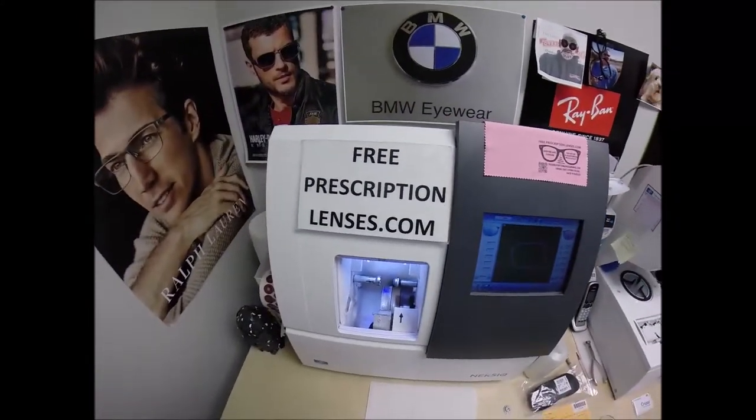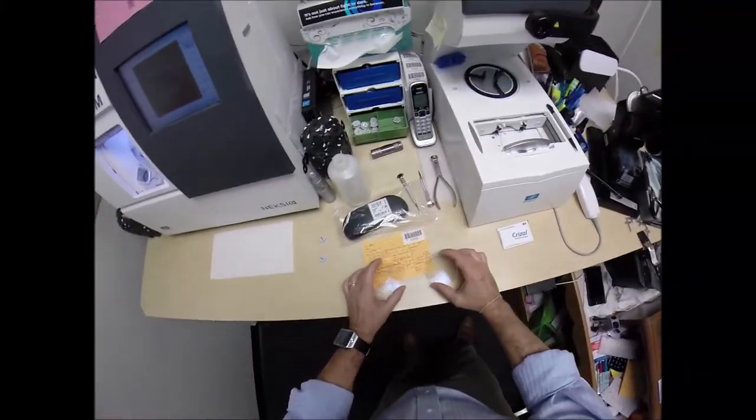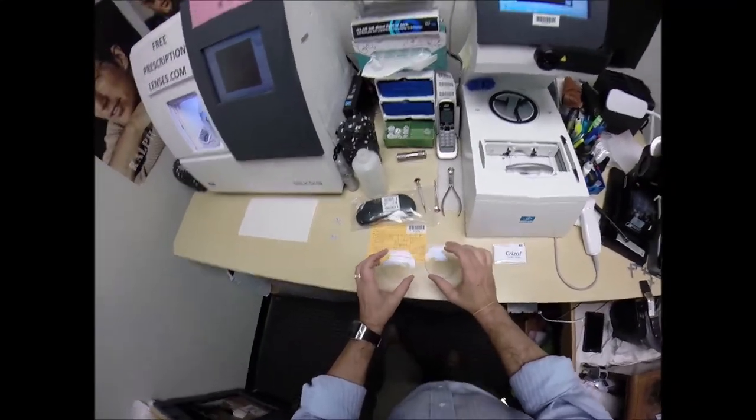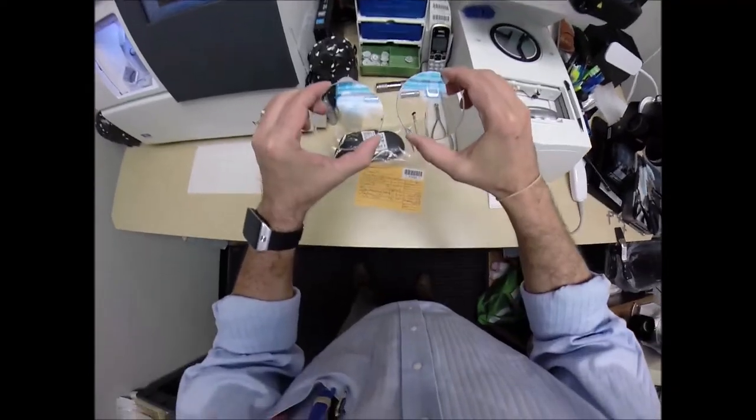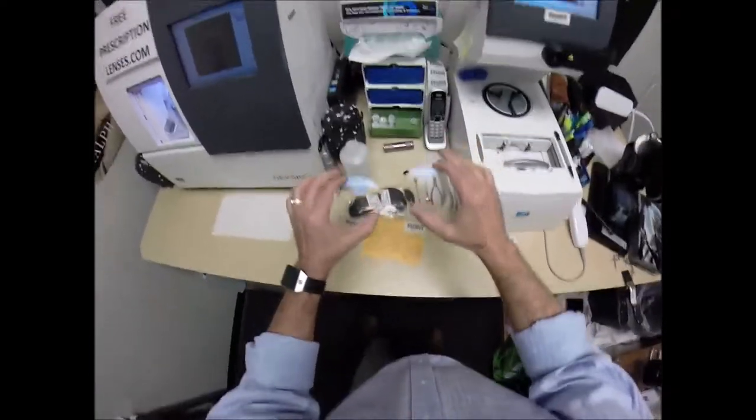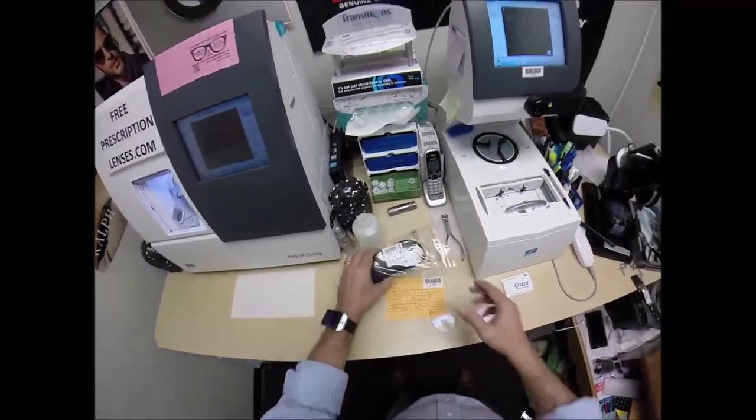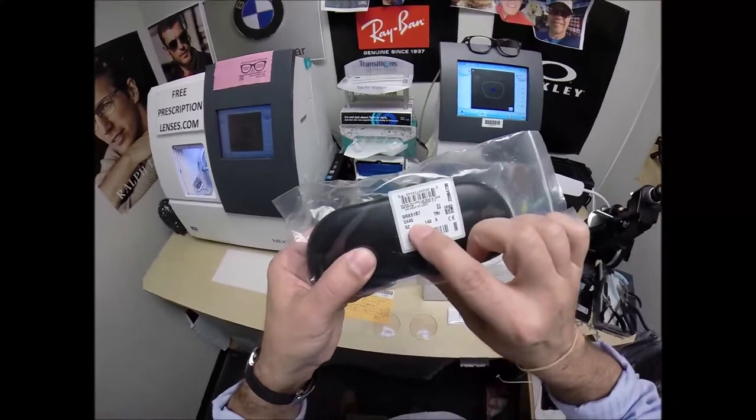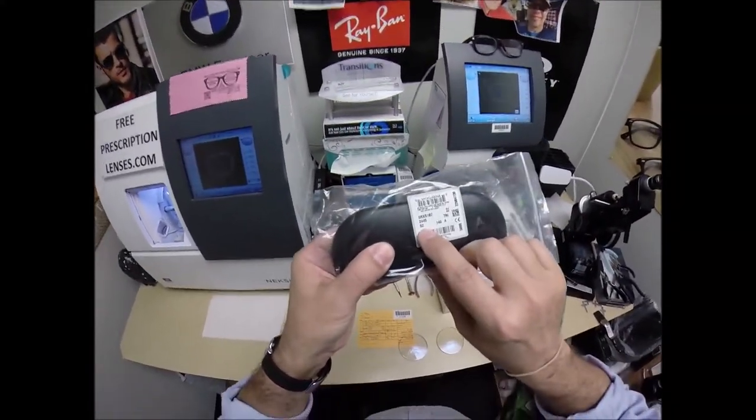Seymour Better here with FreePrescriptionLenses.com, and thank you for your patience. I just got back from my trip to Maine and now I'm going to cut the Verilux X with Transitions Brown and Crizal Sapphire for your Ray-Ban 5187 color 2445, which is the glow in the dark green in the 52 eye size.